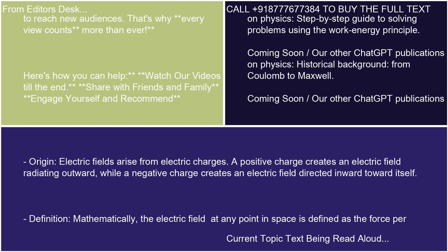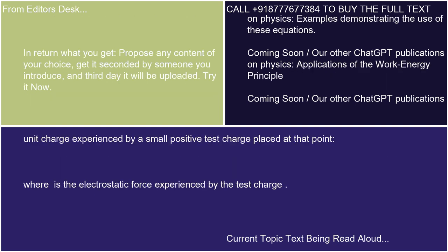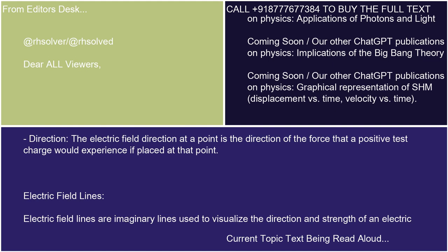Mathematically, the electric field at any point in space is defined as the force per unit charge experienced by a small positive test charge placed at that point, where F is the electrostatic force experienced by the test charge. The electric field direction at a point is the direction of the force that a positive test charge would experience if placed at that point.